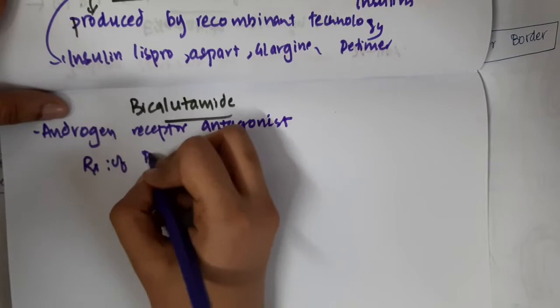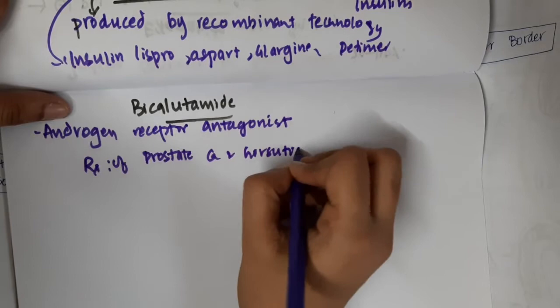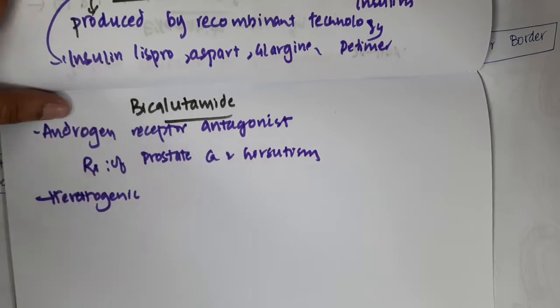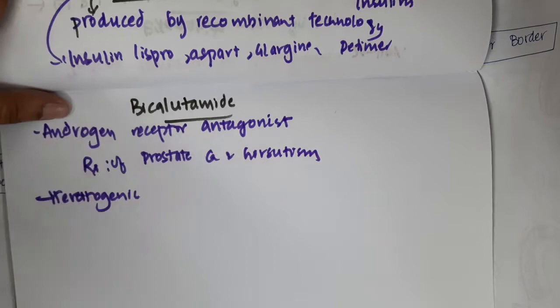Bicalutamide is teratogenic. A notable side effect is that it can cause gynecomastia. Thank you for watching.